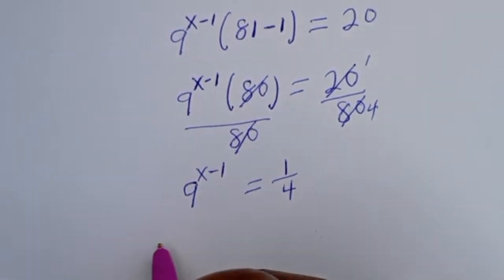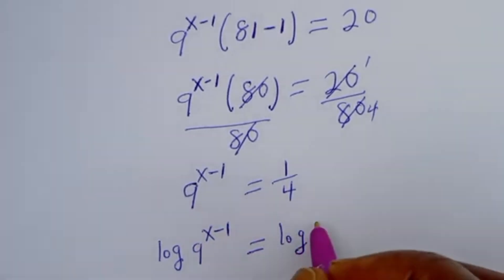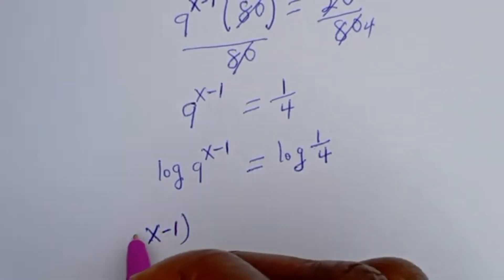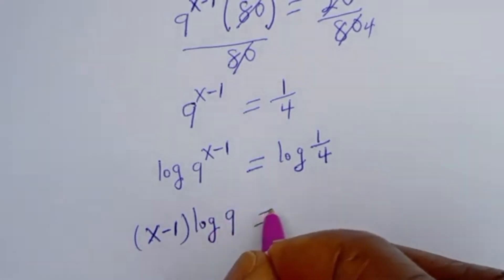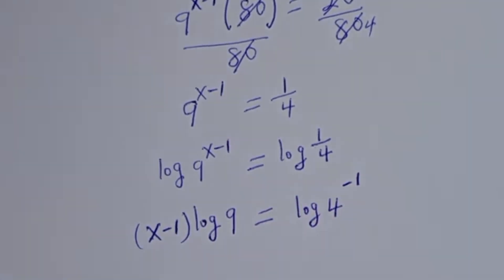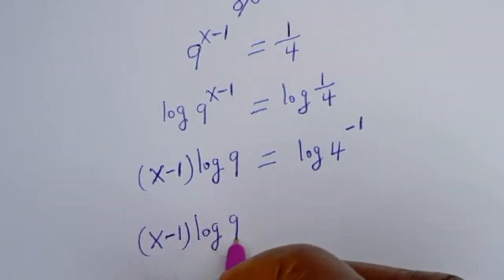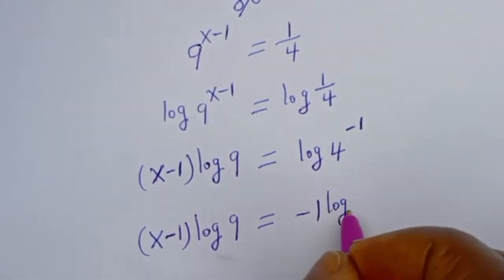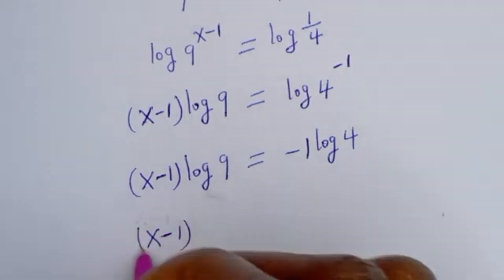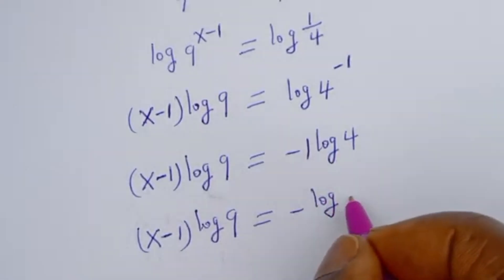Now let's take the log of both sides. We have log of 9 to the power of x minus 1, is equal to log of 1 over 4. And this is x minus 1 times log 9, is equal to minus log 4.